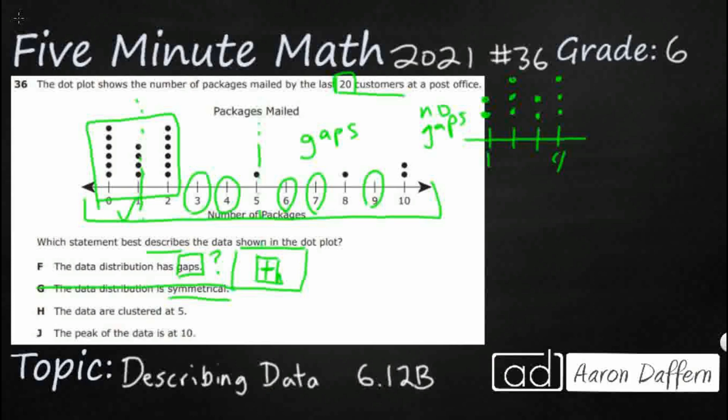H. The data are clustered. Now remember, data is actually a plural word. The singular is datum, but we usually just use data. So that's why we have this weird subject-verb agreement, right? The data are clustered at 5. So clustered means just like a cluster of grapes. Where is most of our dots showing up? And even though 5 is in the middle of our data spread from 0 to 10, that's not where they're clustered.